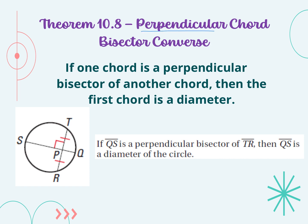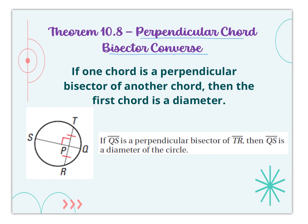The Perpendicular Chord Bisector Converse works in reverse. If you have a chord that is a perpendicular bisector of another chord — two chords that intersect where one chord is split in half — then that bisecting chord must be the diameter. In the previous theorem, the conclusion was that the chord was split in half; in this converse, the conclusion is that the bisector is the actual diameter.